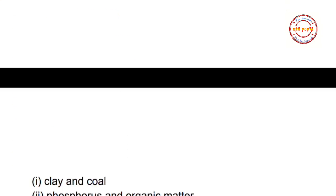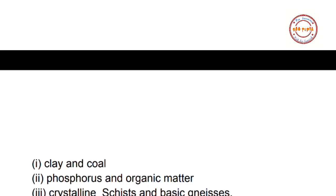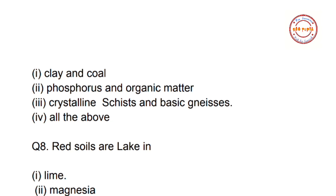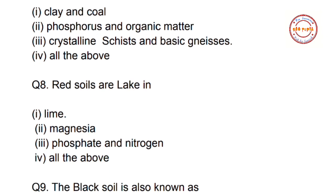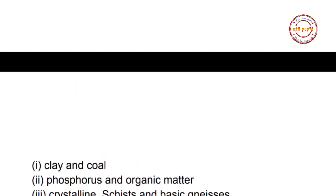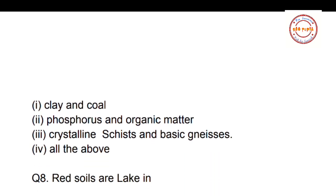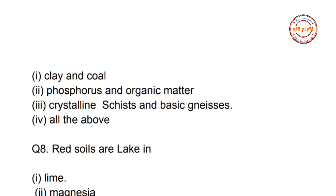Question number seven: the black color of black soil is due to — first option: clay and coal; second option: phosphorus and organic matter; third option: crystalline schist and basic niches; fourth option: all of the above. The correct answer is option three — crystalline schist and basic niches.